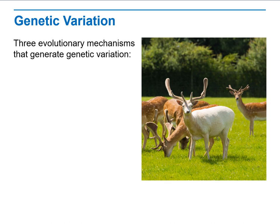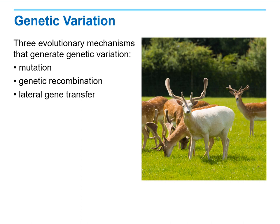When we talk about genetic variation, we are looking at the percentage of having different characteristics and different phenotypes compared to the other population. The three evolutionary mechanisms that generate genetic variation are mostly mutation, genetic recombination, and lateral gene transfer.